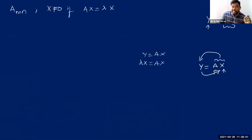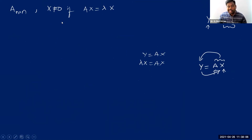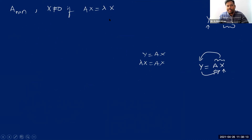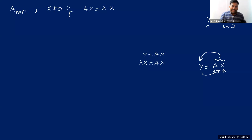When you are given a square matrix capital A, any non-zero vector capital X is said to be an eigenvector if and only if Ax equals lambda times capital X. This is how we define eigenvector mathematically.